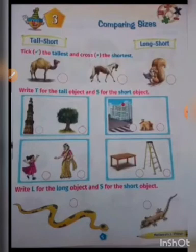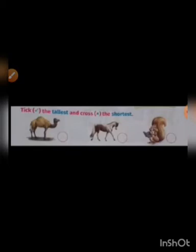Now today we are going to complete an exercise from our mass book, page number 5. Read the question: pick the tallest and cross the shortest. Can you see the pictures? Who is taller? Among the three pictures, camel is taller and squirrel is shorter. So we are going to tick the camel — tick the circle in front of the camel.